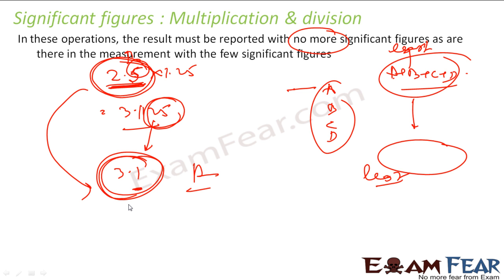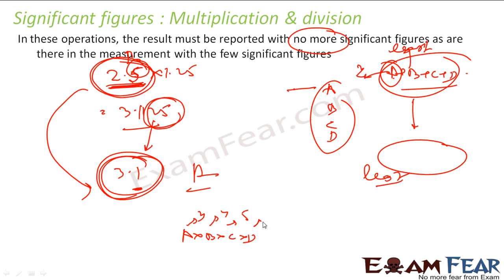The general rule for all operations — addition, subtraction, multiplication, division — is: find the least number of significant figures among all inputs. Your answer will also have that least number of significant figures. For example, if inputs A, B, C, D have 3, 4, 5, and 1 significant figures respectively in a multiplication, your output will have only 1 significant figure.